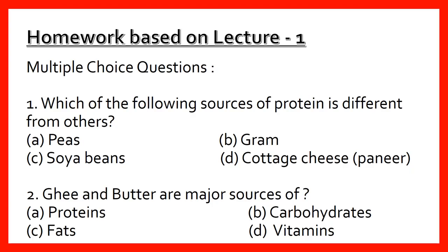We have now come to the end of Lecture Number 1. Here are a few homework questions based on the topics we covered. Multiple choice questions. Question number one: Which of the following sources of protein is different from others? Option A: peas. Option B: gram. Option C: soya beans. Option D: cottage cheese, commonly known as paneer.